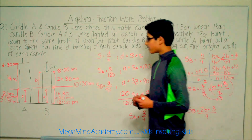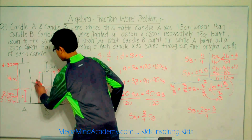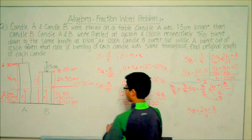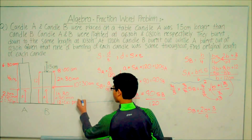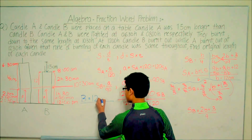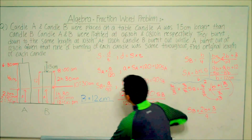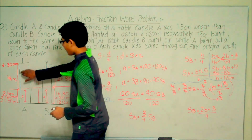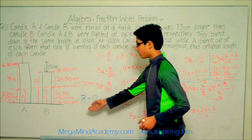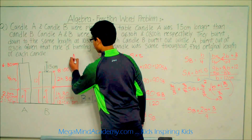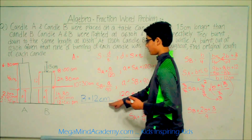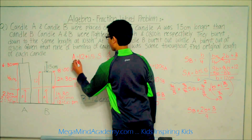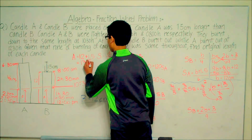So the original length of Candle B is 12 centimeters. Now we need to find the original length of Candle A. Since Candle A is 1.5 centimeters taller than Candle B, Candle A equals 12 plus 1.5, which equals 13.5 centimeters.